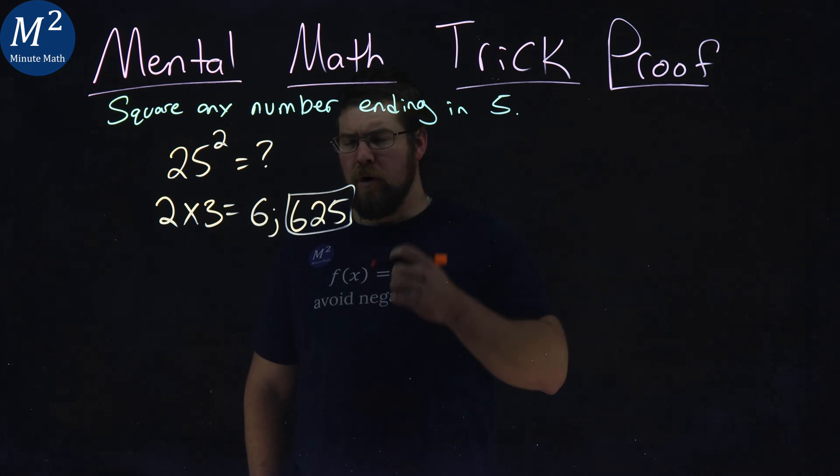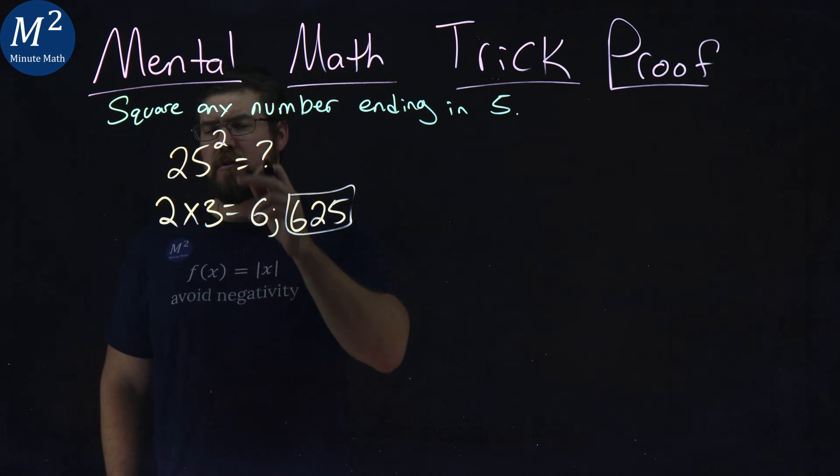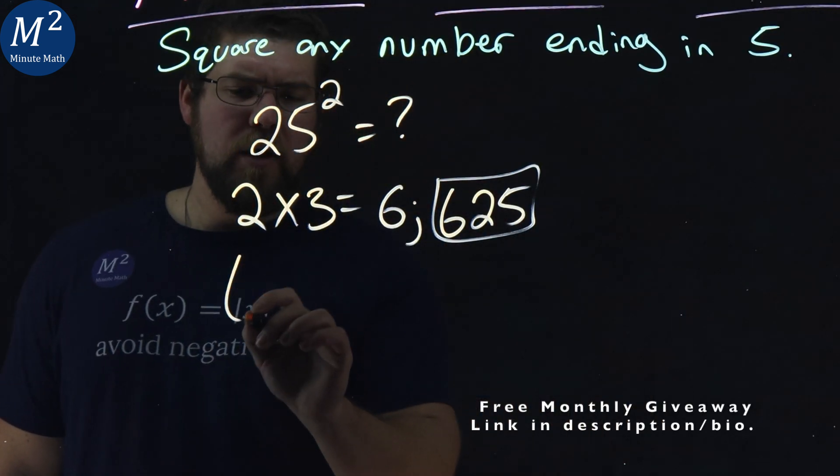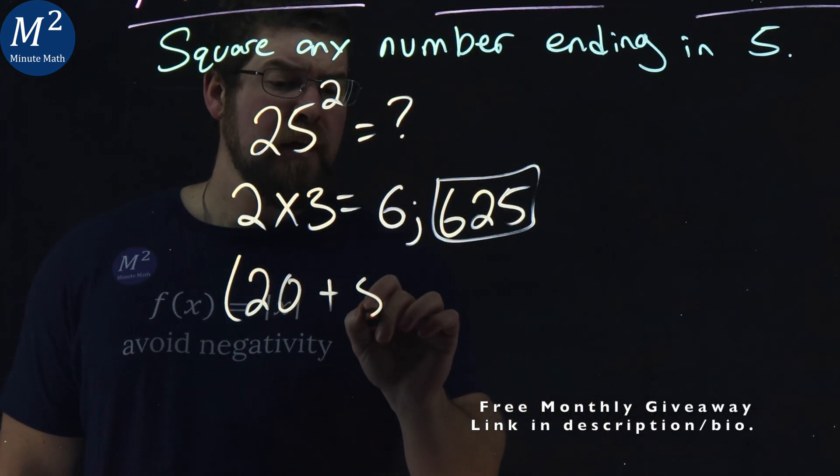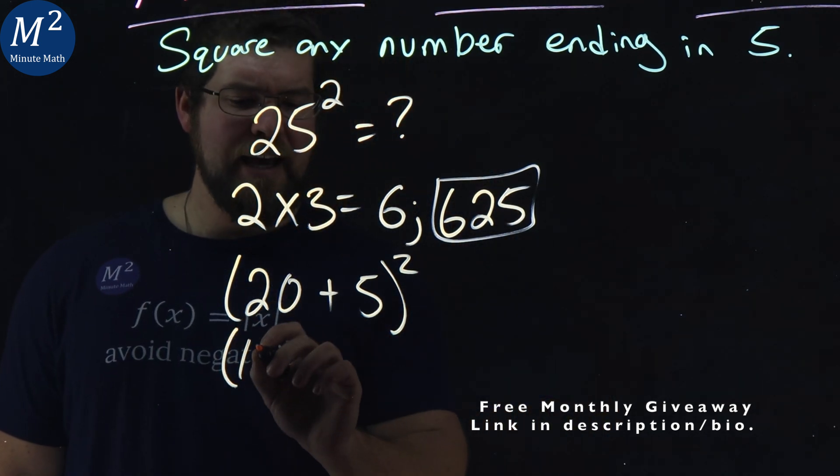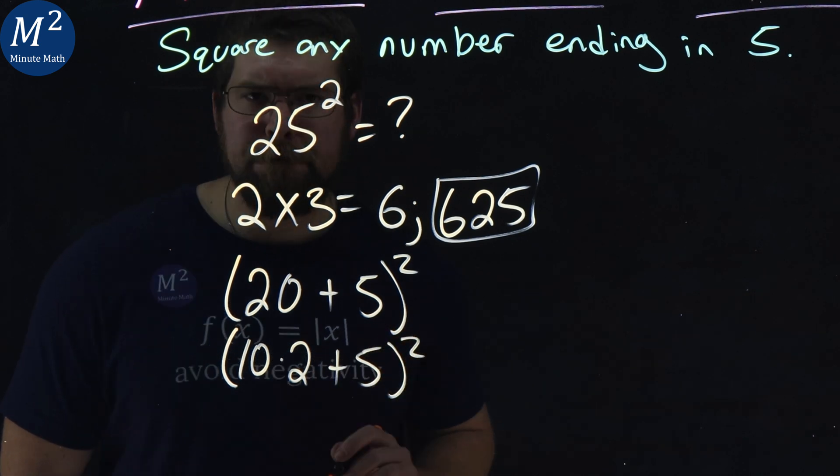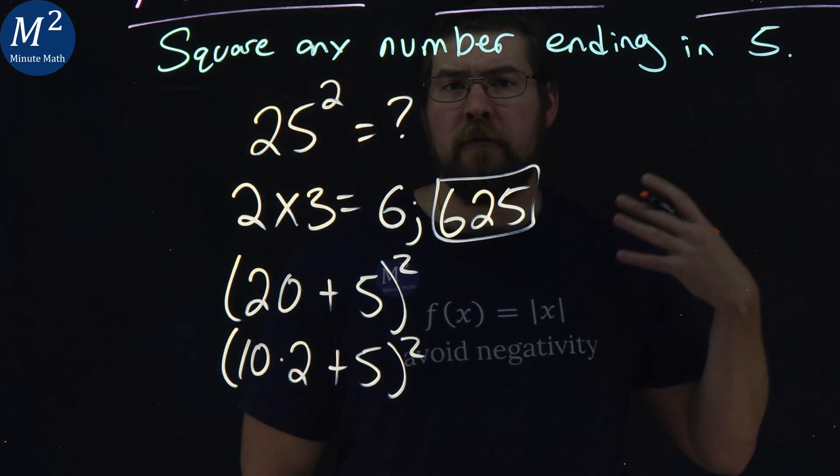So how does this trick work? Well, I want to break down what is 25 squared. 25 squared is 20 plus 5 all squared. And then with that, 20 is really 10 times 2 plus 5 all squared. That's going to be an important visual for the problem.